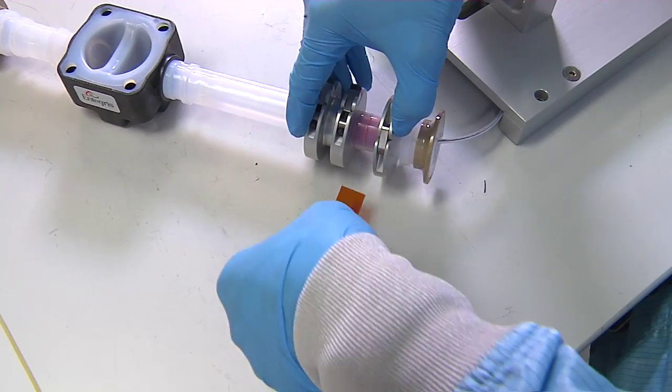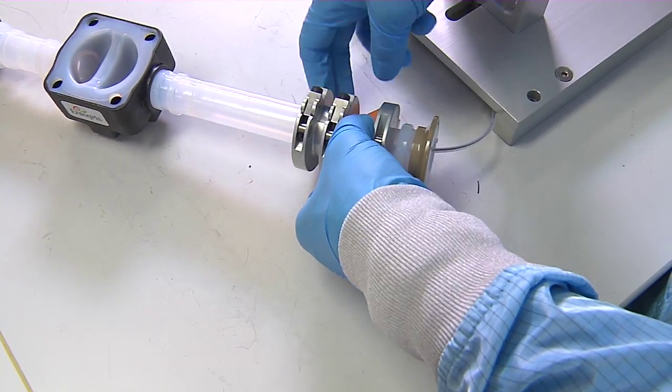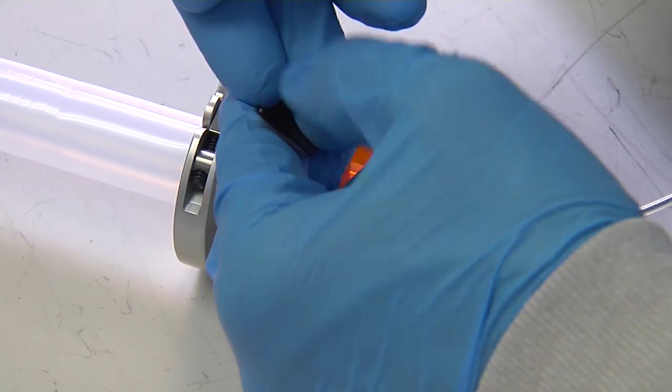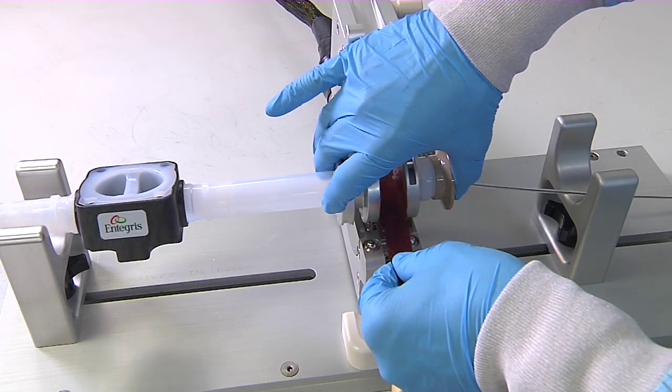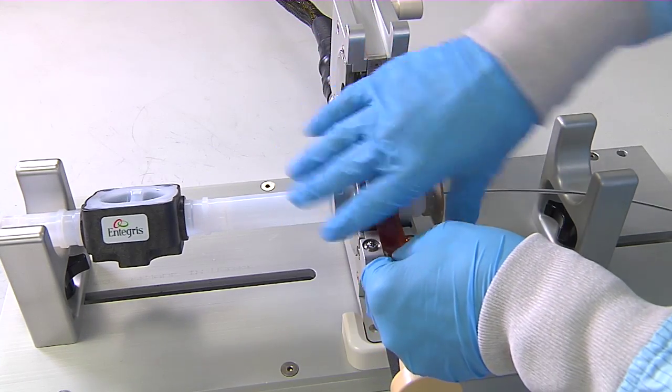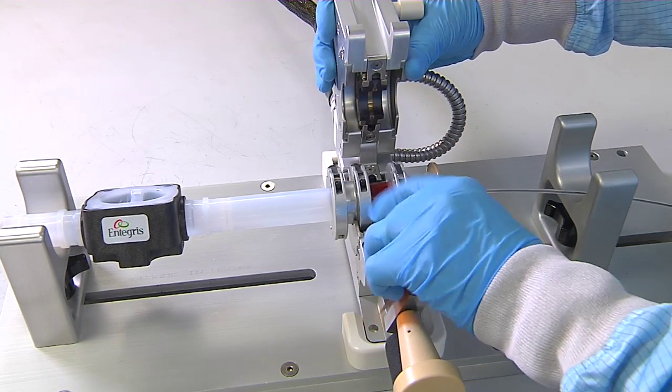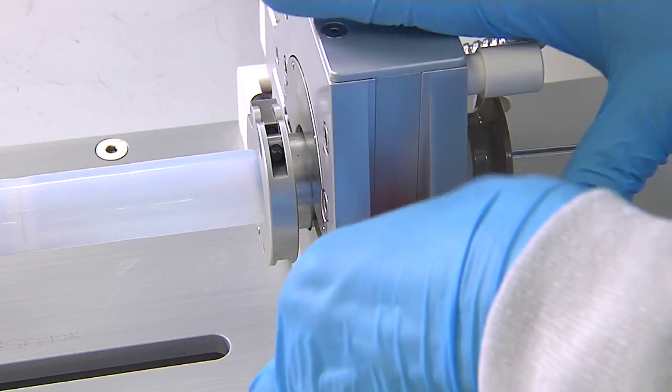Place the Kapton film around the components to be welded, bringing the film ends together. Install the two components with insert centered inside and wrap into the weld head. Close the weld head around the components.